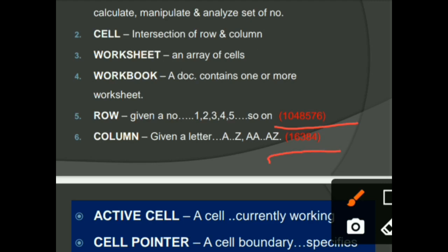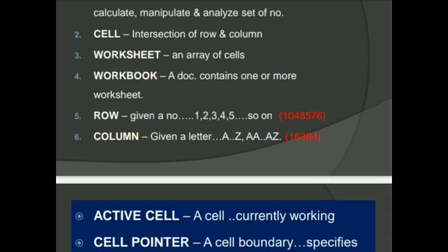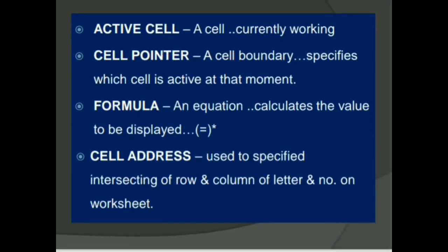Next is active cell. The cell in which you are currently working, that cell is known as active cell. Active cell is also known as selected cell, or current cell, or cell pointer. Cell pointer specifies which cell is active at that moment. The cell boundaries are specified and highlighted. That is active cell.